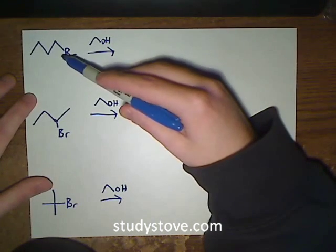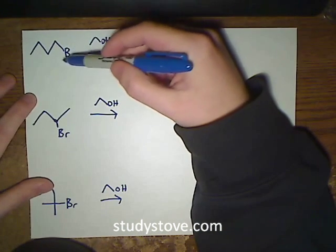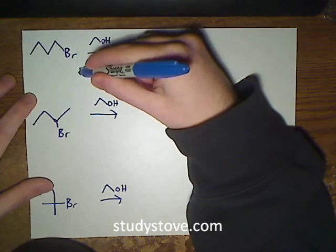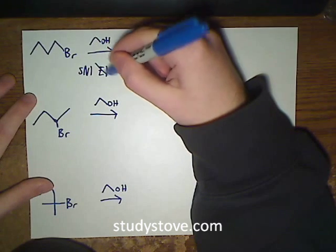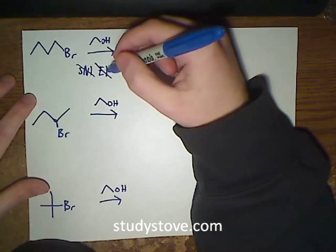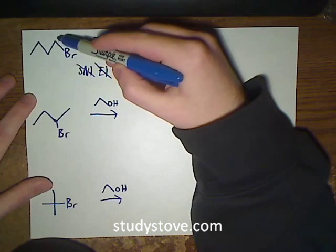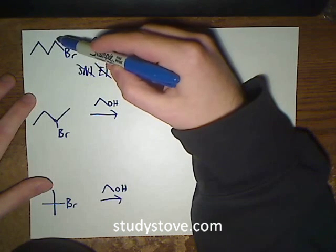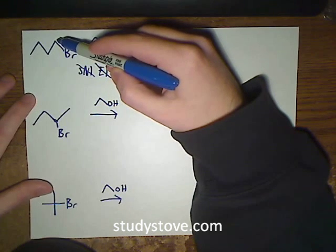I'm going to start with this first one. We have a primary carbon with a good leaving group on it, and because it's only a primary carbon, we know right away that we can't have an SN1 or an E1 reaction. The reasoning for that is we can't form the carbocation intermediate that we need to have an SN1 or E1 mechanism, because the carbocation is just not going to be stable enough. It's not going to get enough stability from hyperconjugation from only one adjacent carbon. You need to have at least two.